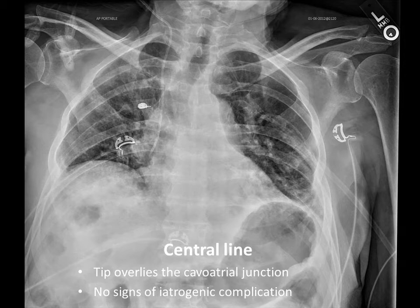One reason we want to see the tip terminate at the cavo-atrial junction is to avoid arrhythmias. The other reason is that there are ports on the line, and by ensuring the tip terminates there, you're ensuring all of the ports are beyond the last of the valves in the venous system.